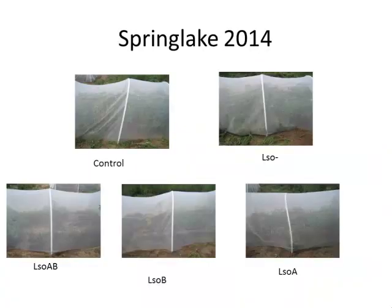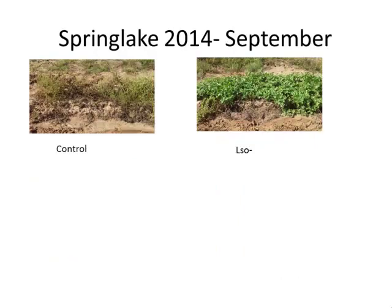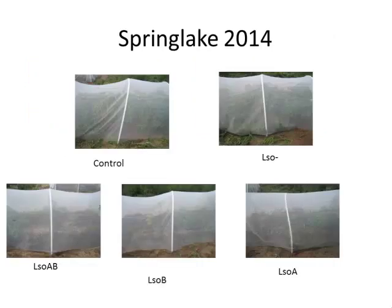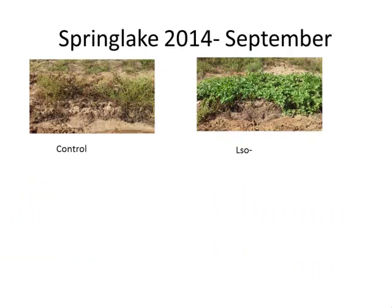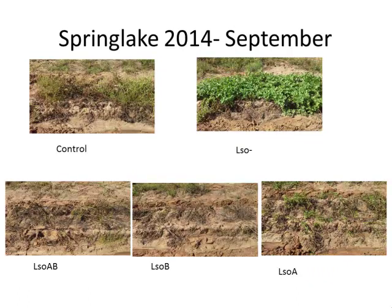In Spring Lake, we repeated the same experiment, with a control cage with no insect, a cage with insects carrying no LSO, LSO-AB, LSO-B, and LSO-A. The plants were harvested 81 days after infection. The control and the LSO-negative looked perfectly healthy. In the control cage there was a caterpillar by the end of the experiment — the control was still green three weeks before harvest but didn't look as good at harvest. Whereas LSO-AB was completely dead, LSO-B was completely dead, and we could still see some green on LSO-A.